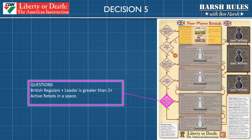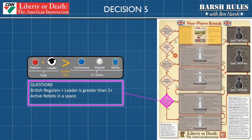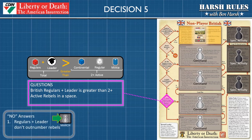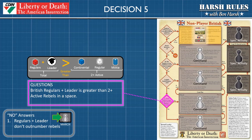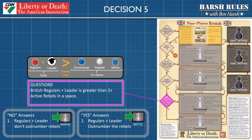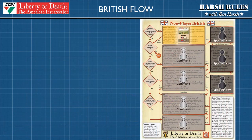We've worked all the way down the decision lane to decision diamond five. The question is: is there a space with at least two or more active rebel pieces that are outnumbered by the total British regulars in that space plus any leader? If the answer is no, then execute the march command. If the answer is yes, then execute the battle command. Now let's quickly recap the decision diamonds with some additional commentary.